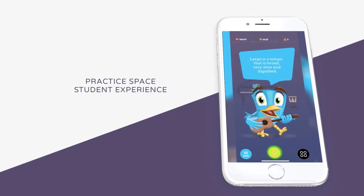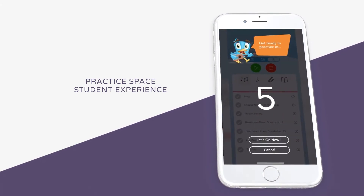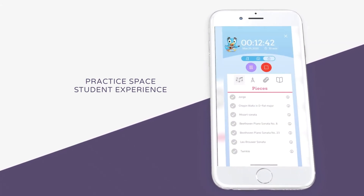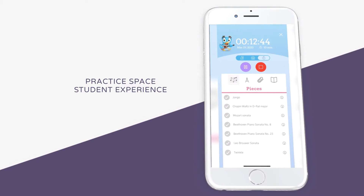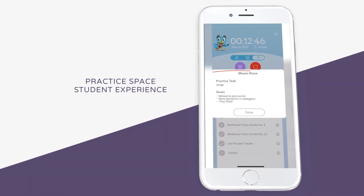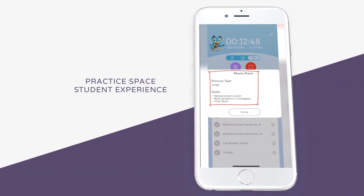To start your practice, click on the green play button. Once you're in your practice dashboard, you'll see a list of pieces your teacher has assigned to you. Click on the piece to see what practice tasks you were assigned.